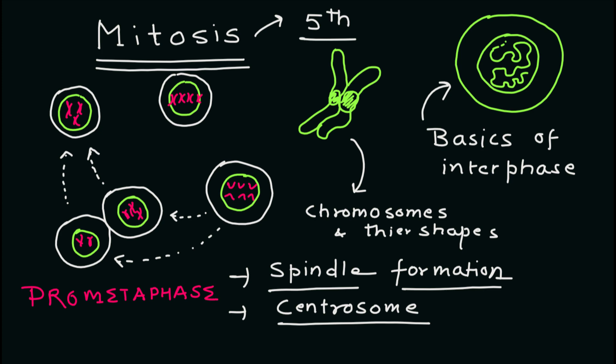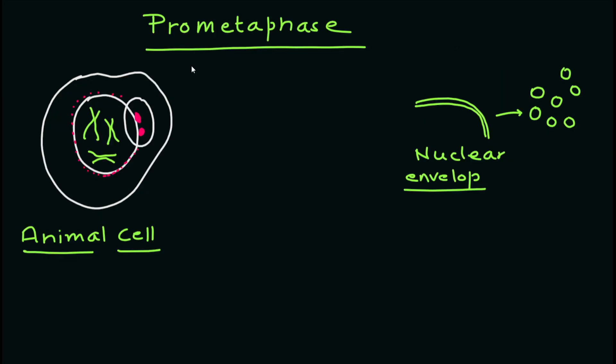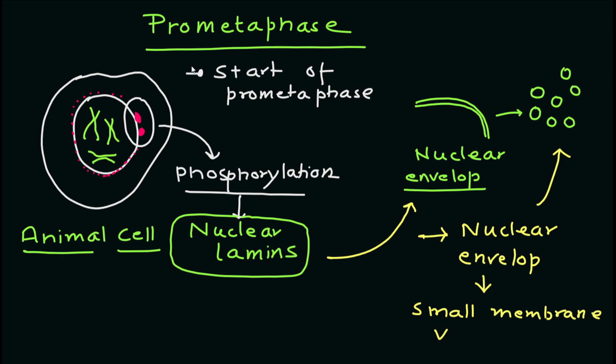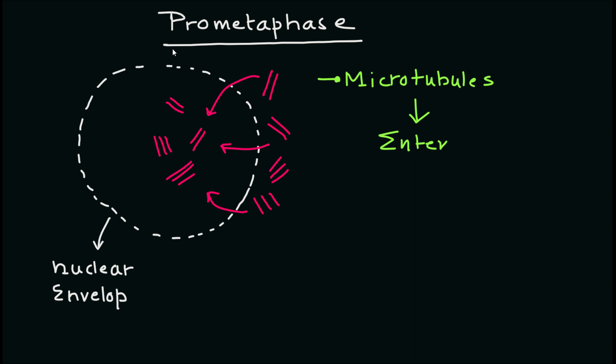In this video we will discuss prometaphase. At the beginning of prometaphase in animal cells, phosphorylation of nuclear elements causes the nuclear envelope to disintegrate into small membrane vesicles. As the process continues, microtubules invade the nuclear space. When there is disintegration of the nuclear membrane, the process is also known as open mitosis.